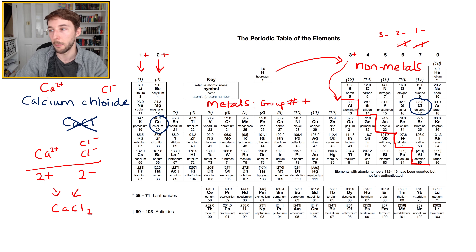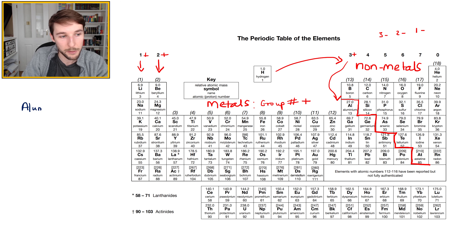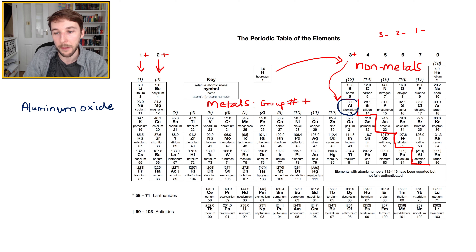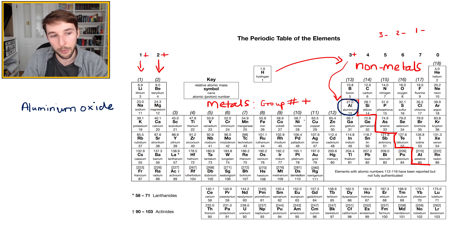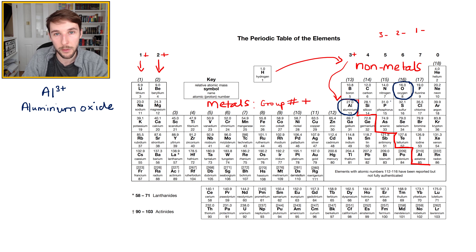Let's look at aluminium oxide. If you're writing a balanced equation with aluminium oxide, you need its formula correct. Aluminium is a metal in group 3, so it loses 3 electrons and forms Al3+. Oxygen is a non-metal in group 6, so it needs to gain 2 electrons to get a full outer shell, making the oxide ion O2−.